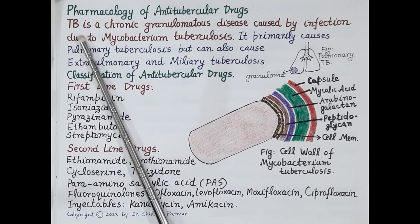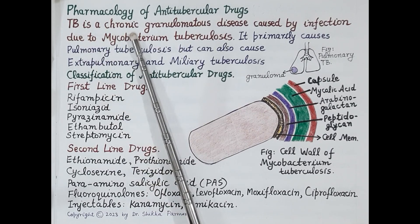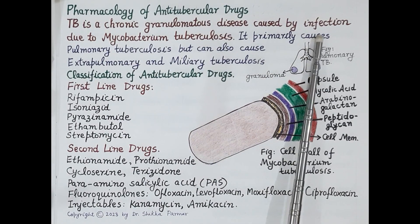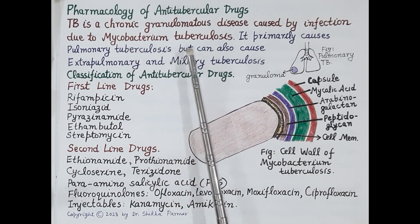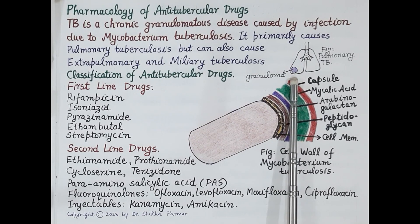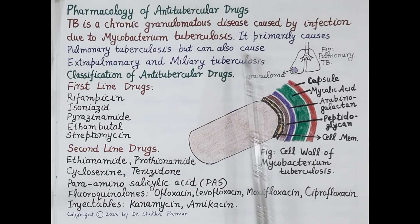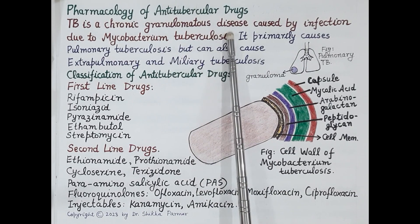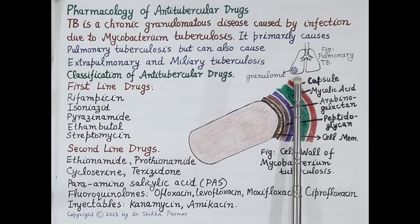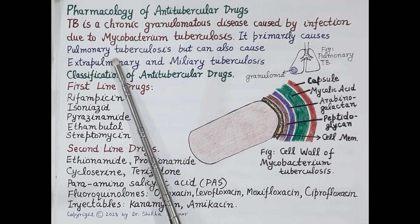Tuberculosis is also known as TB. TB is a chronic granulomatous disease caused by infection due to a bacteria termed as Mycobacterium tuberculosis, also known as tubercle bacilli. The lesion produced by this bacteria is known as granuloma, and thus tuberculosis is known as a granulomatous disease.